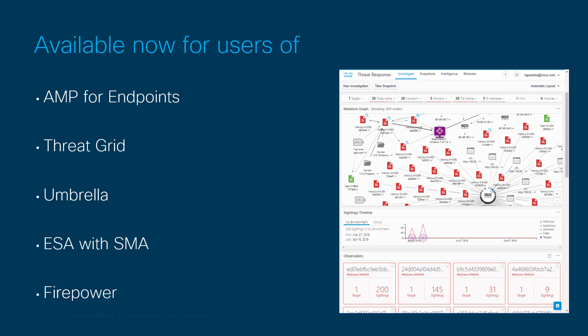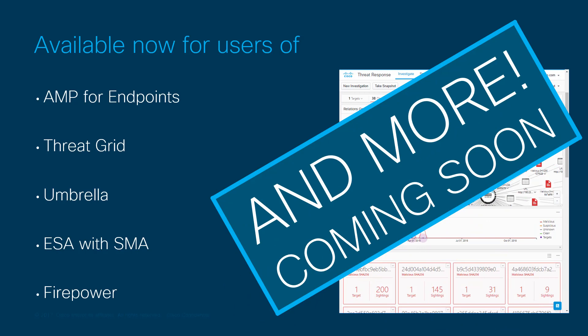Cisco's Threat Grid Malware Analysis cloud platform, our Umbrella secure DNS solution, Cisco Email Security when managed by our security management appliance, and Cisco Firepower network security devices. In addition, we are adding new integrations on a regular basis, and by the time you watch this video, the list of products that include Threat Response may be longer than what's shown here.